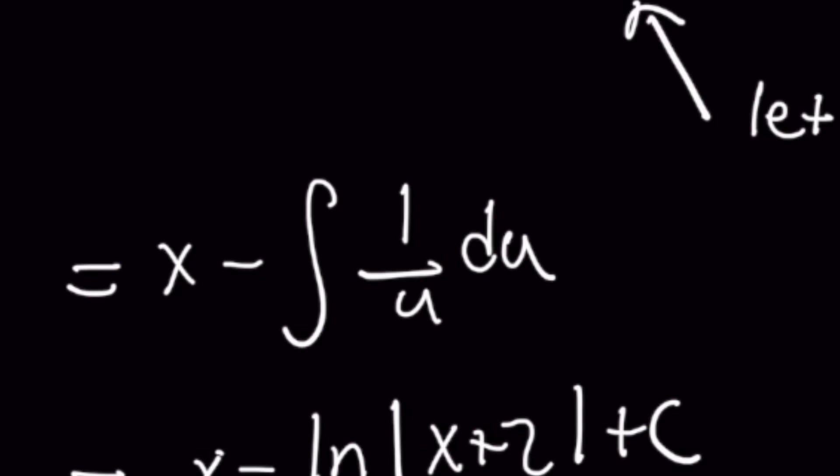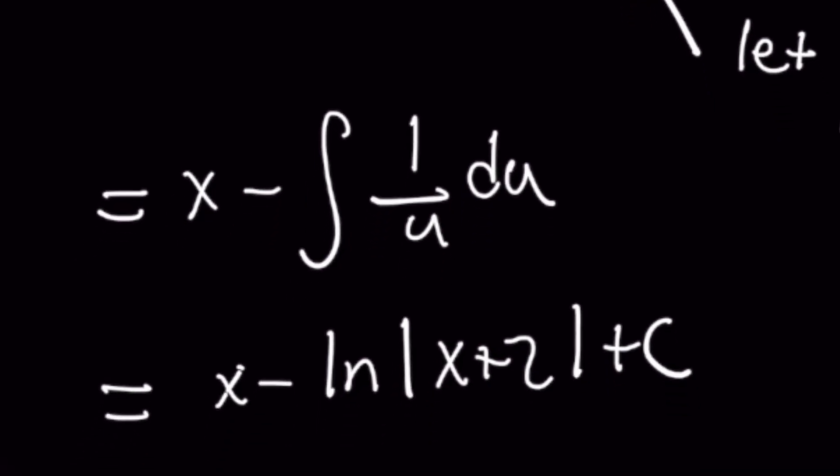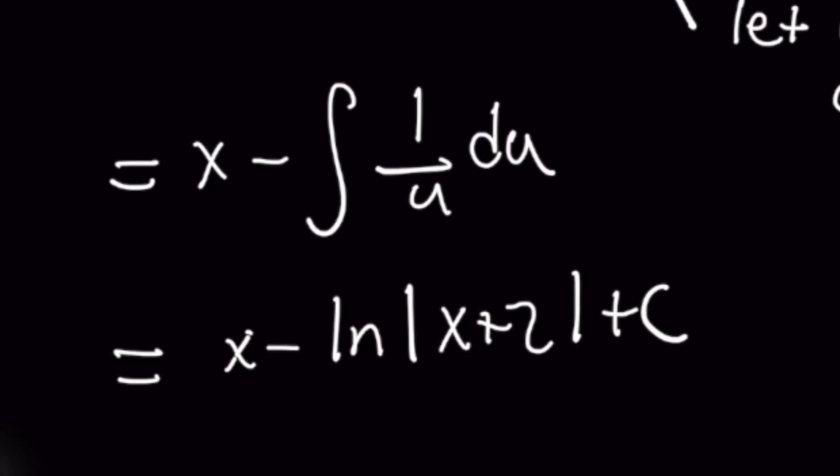Now the integral of 1 over u is simple, it's just the natural log of the absolute value of u plus C. But you got to be mindful to put back in what your substitution was for which was x plus 2. And there you have it.